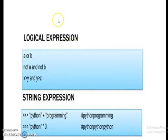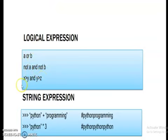Next is logical expression. There are three types of logical operators: logical AND, logical OR, and logical NOT. Examples include: a OR b, NOT a AND NOT b, and x greater than y AND y greater than z. This is a combination of variables, logical operators, and relational operators.